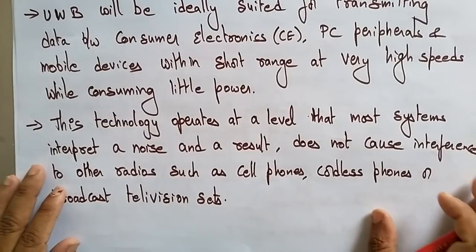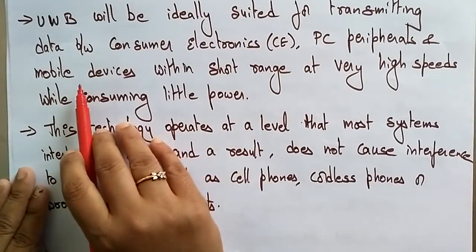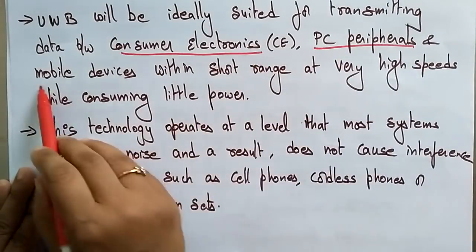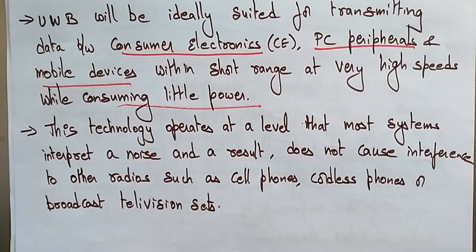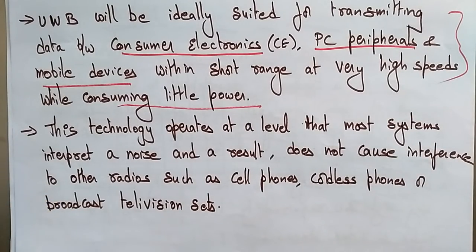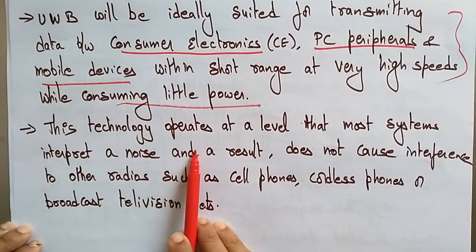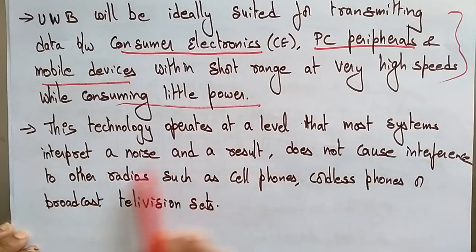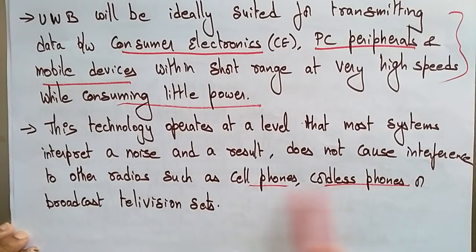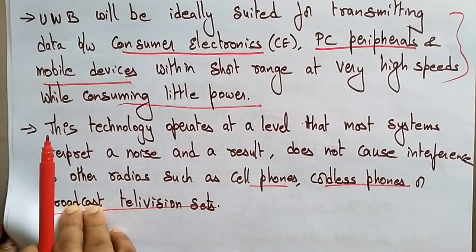UWB is ideally suited for transmitting data between consumer electronics, PC peripherals, and mobile devices within short range at very high speed, while consuming very little power. This UWB technology operates at a level that most systems interpret as noise, and as a result does not cause interference to other radios such as cell phones, cordless phones, or even broadcast television sets.